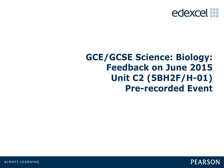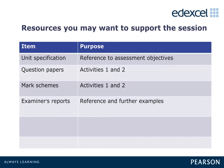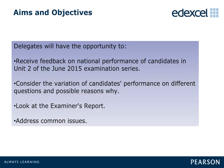Hello and welcome to this pre-recorded event for the June 2015 examination for Unit B2 GCSE Additional Science. To help you get the most out of this feedback, you may want to have the following documents handy as we will refer to them during the session. Here are the aims and objectives of today's session: you will receive feedback on national performance of candidates in Unit 2 of the June 2015 examination series, consider the variation of candidates' performance on different questions and possible reasons why, look at the examiner's report, and address common issues.